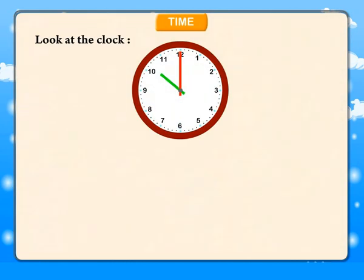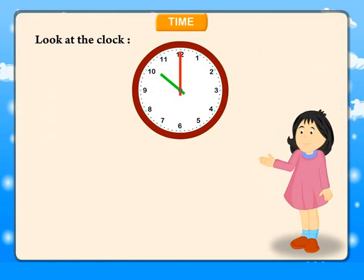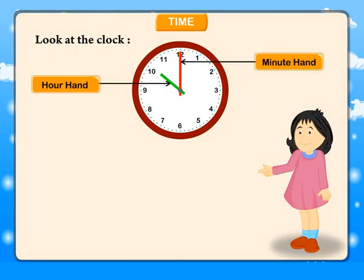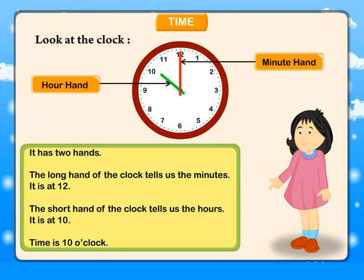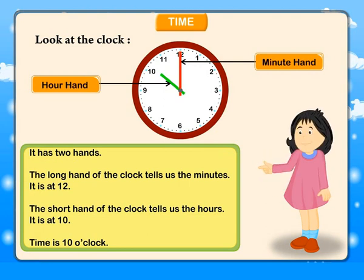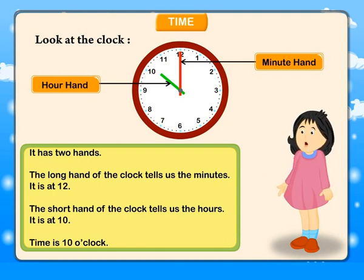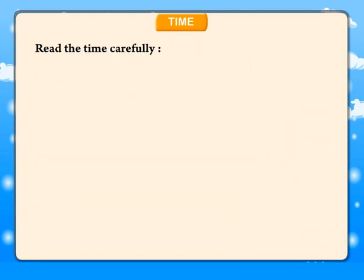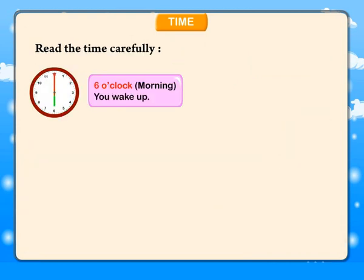Time. Look at the clock. It has two hands: the hour hand and the minute hand. The long hand tells us the minutes — it is at 12. The short hand tells us the hours — it is at 10. The time is 10 o'clock.